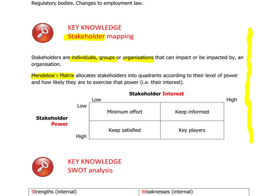Mendelow's Matrix is used for stakeholder mapping. It looks at a stakeholder's level of interest in an organisation and a stakeholder's level of power, and that can range from low to high on both axes. If we look at a stakeholder that has got a low level of interest and a low level of power, what this mapping technique is saying is: what should management do for that stakeholder? Well, if the stakeholder isn't really interested and doesn't have a lot of power, management should not do a lot. The technical term used in the matrix is minimal effort.